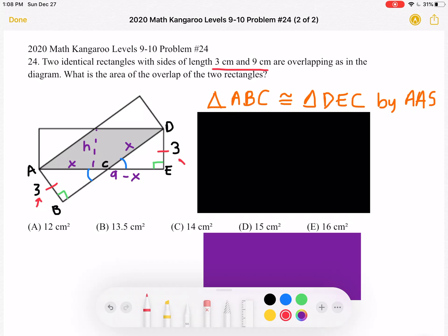So we have an angle, angle, and side that are congruent, which means this statement over here must be true.